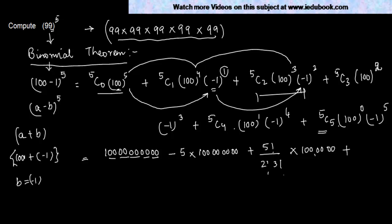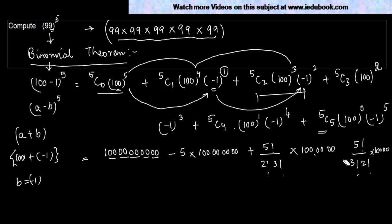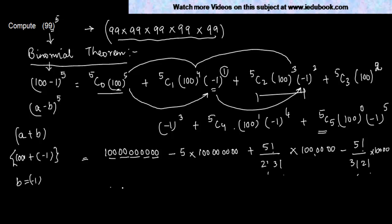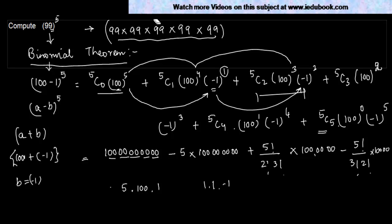Next, 5C3 = 5!/(3! × 2!) = 10, so the term is 10 × 100^2 × (−1)^3. Since (−1)^3 = −1, we change the sign: −10 × 10,000 = −100,000. Then 5C4 = 5, so 5 × 100^1 × (−1)^4 = 5 × 100 × 1 = +500. Finally, 5C5 = 1, and 100^0 = 1, so the last term is 1 × 1 × (−1)^5 = −1.